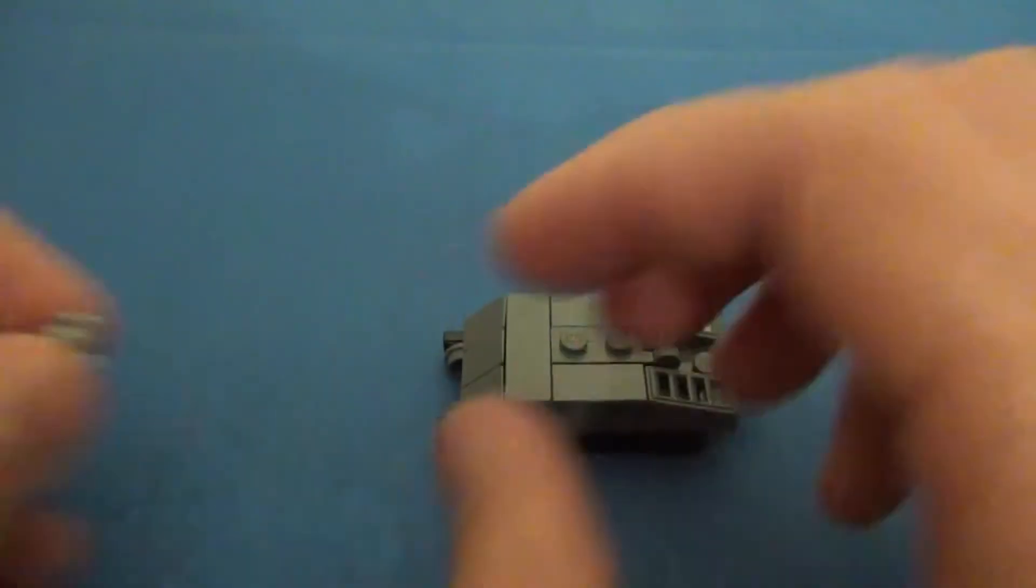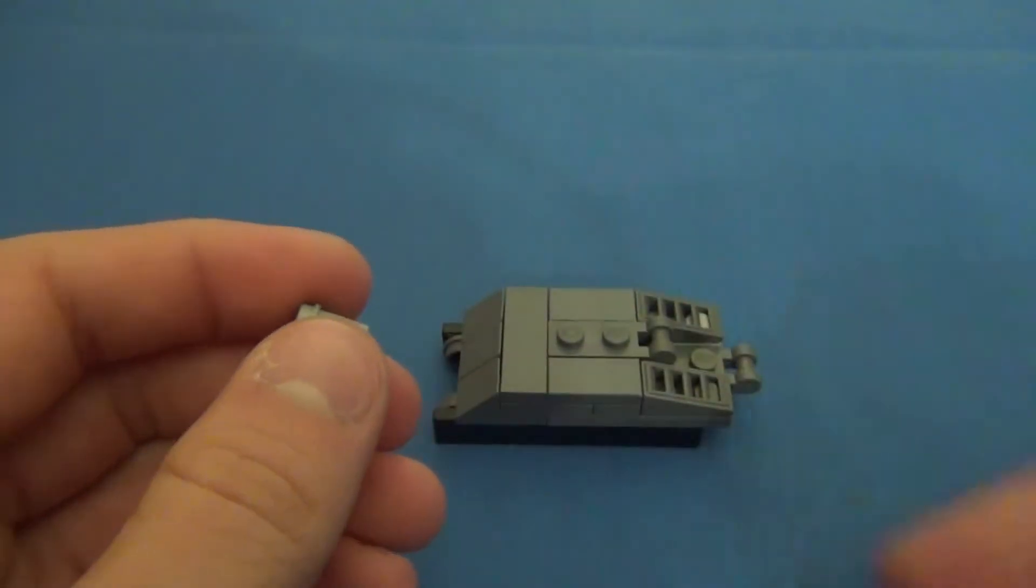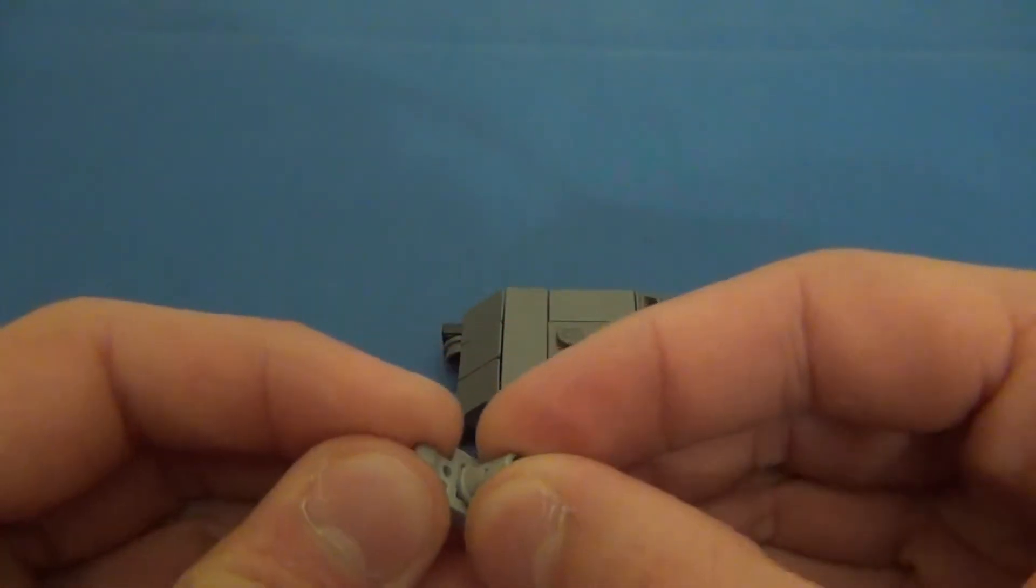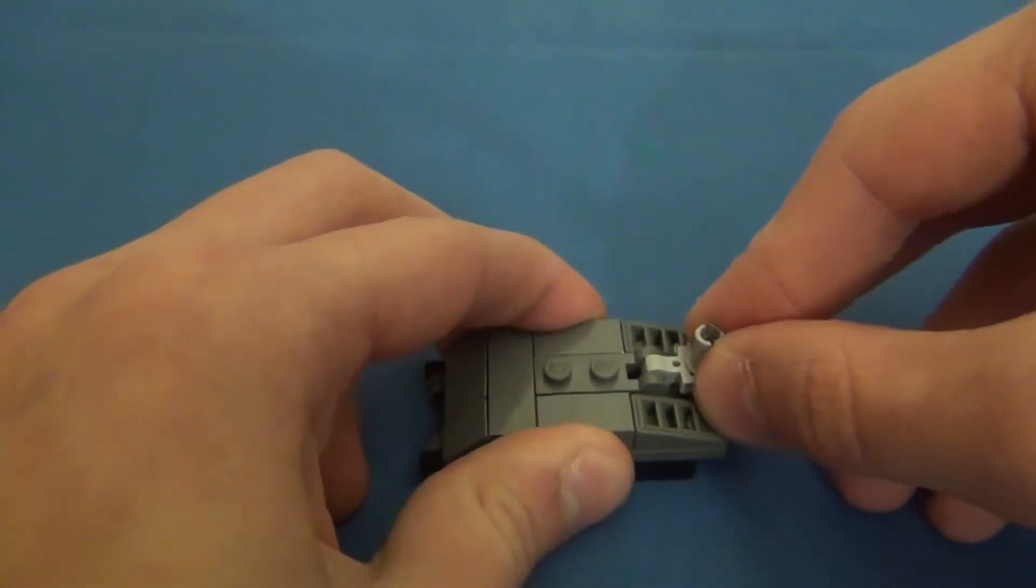And to make the wading gear, first you'll take the 1x1 plate with the clip and you'll turn it upside down and you'll put the Technic half pin on it like that, and it will go on this clip here.